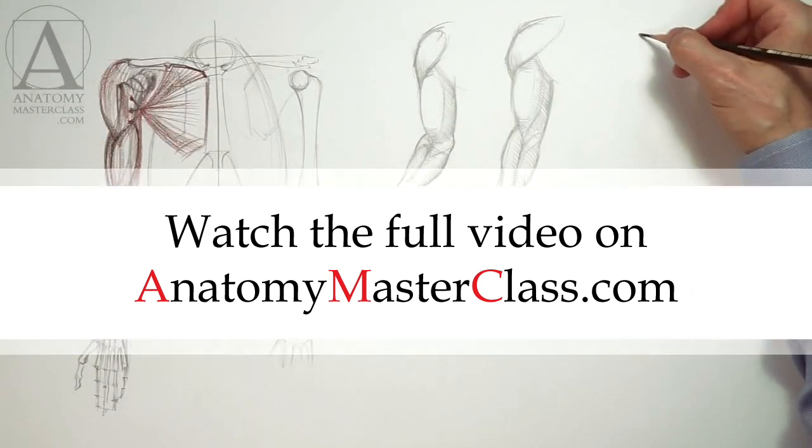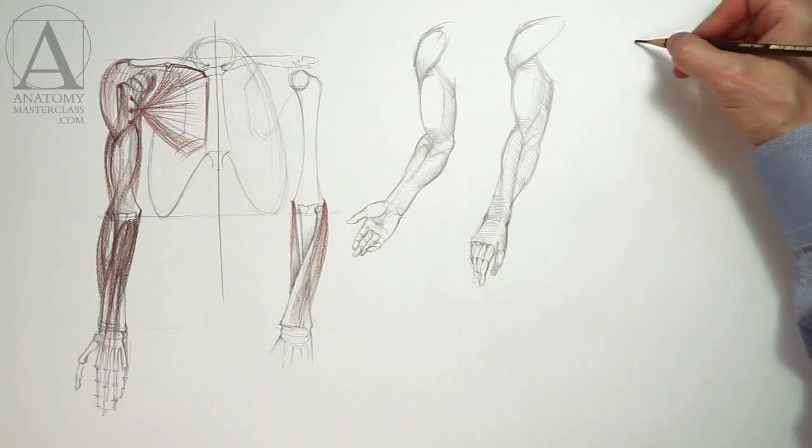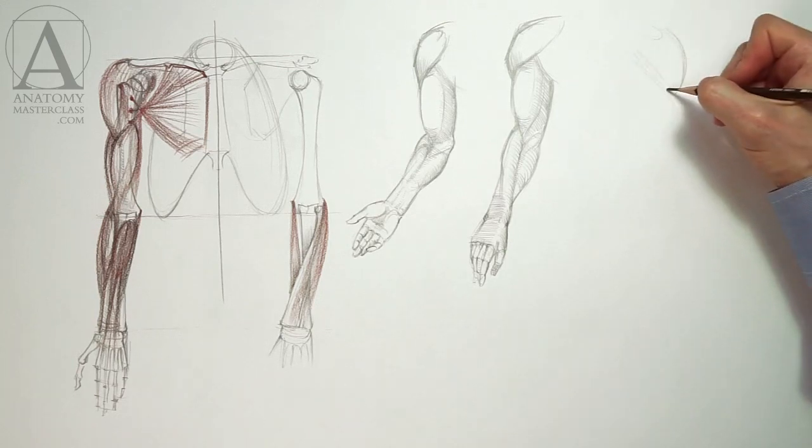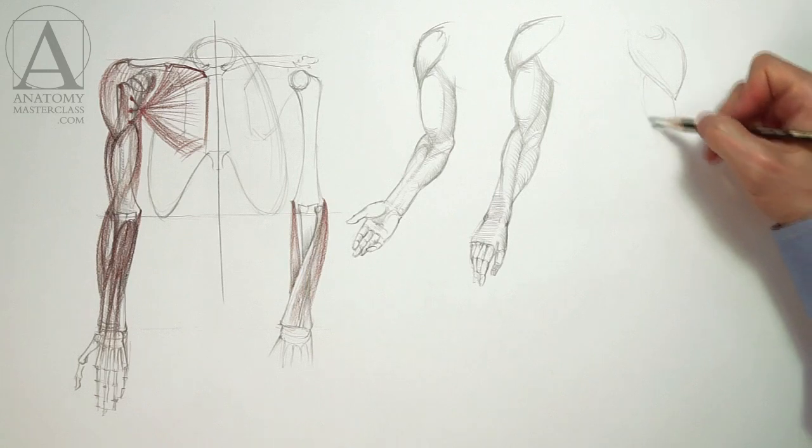Let us make another sketch of the arm. This time, we will draw it from the side. At the shoulder, we have a good view of the deltoid muscle. You can clearly see its triangular shape in all three portions.